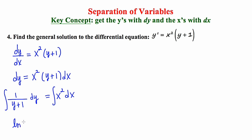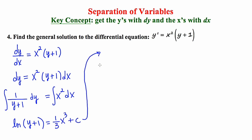The ln would typically be the absolute value of the denominator, but for this problem we already discussed that the absolute value won't be necessary. So we're going to say the natural log of y plus one is equal to one third x cubed plus c. And I'm going to move up top where there's a little bit more space. The implied base when dealing with natural log is e.